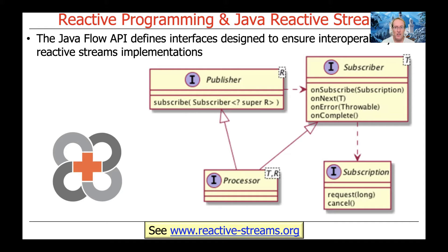We have the Subscriber interface, which allows publishers to call back when a subscriber has been attached, and that is used to start the ball rolling. Then we have three key methods: onNext, onError, and onComplete. These are all hook methods we'll talk about quite a bit, because they're important to knowing how events get propagated from a publisher to one or more subscribers.